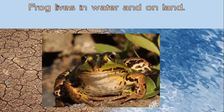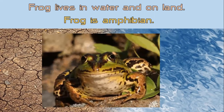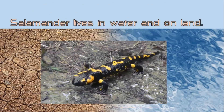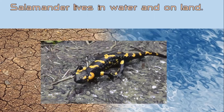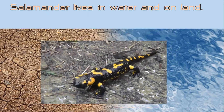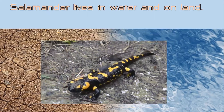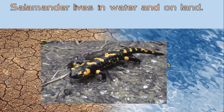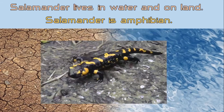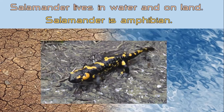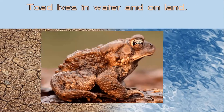Frog lives in water and on land, so the frog is an amphibian. What is it? Salamander lives in water and on land. Salamander is an amphibian. What is it? A tortoise.